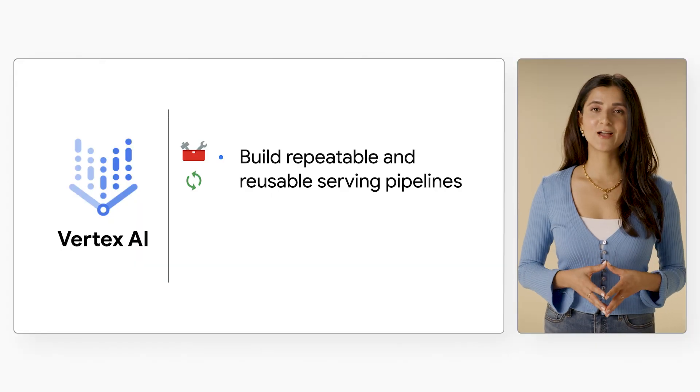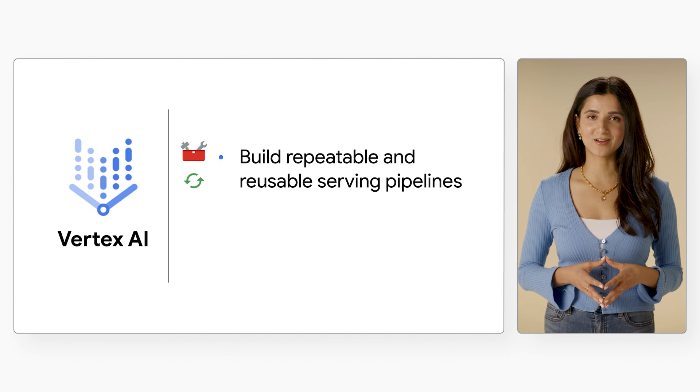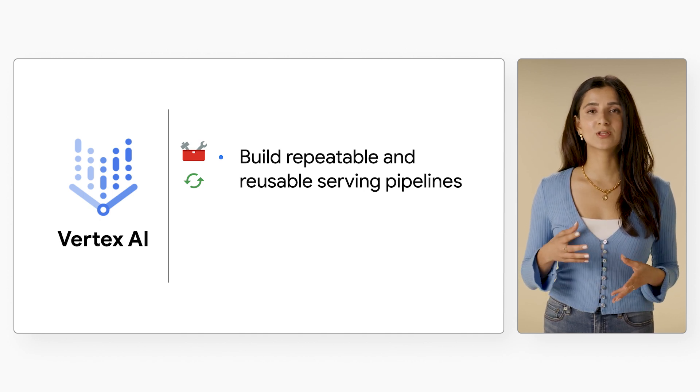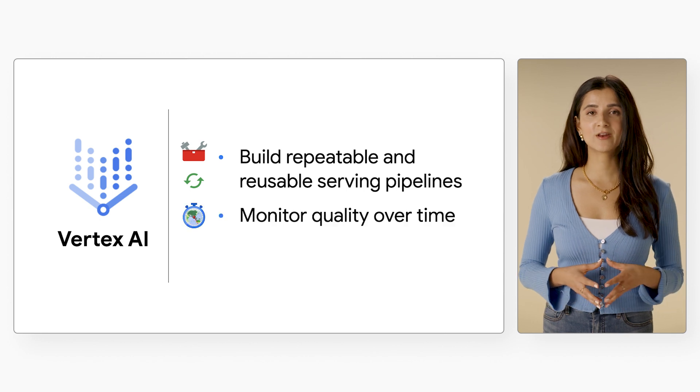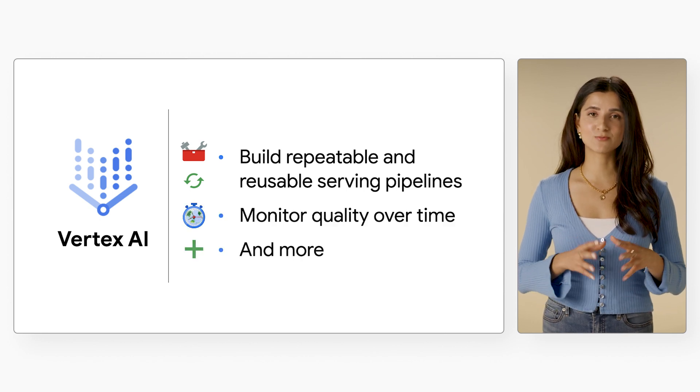You now know all the basics of getting models out of experimentation and into production with Vertex AI. But just like how experimentation is iterative, so is the deployment process — your work doesn't stop when you get a model hosted on the cloud. Vertex AI also includes additional tools we didn't cover in the series that can help you build repeatable, reusable serving pipelines, monitor the quality of models over time, and much more. If there's a topic you'd like to learn more about, let me know in the comments below. Thanks for watching and be sure to check out all of the Codelabs — it's time for you to run some experiments of your own.